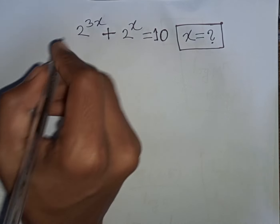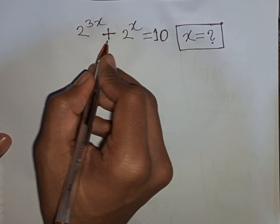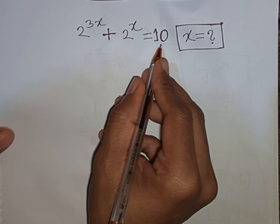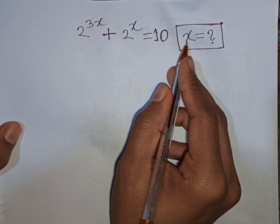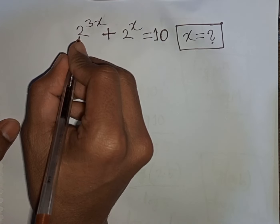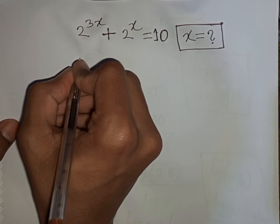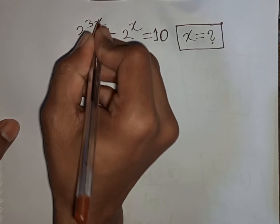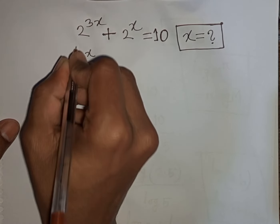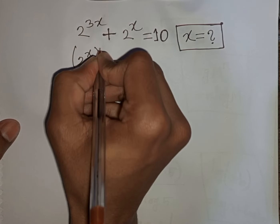How to solve 2 to the power of 3x plus 2 to the power x is equal to 10 — find the value of x. We can write 2 to the power of 3x as 2 to the power x, then bracket to the power of 3.